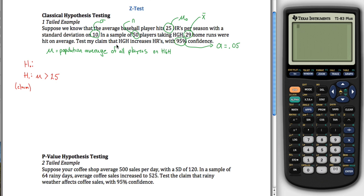If I were testing the claim that HGH decreases home runs, then this would be mu is less than 25. Whether it's greater than or less than, it's a one-tailed example. If it's greater than, it's right-tailed; if less than, it's left-tailed. And in the next example we'll see something completely different where it's two-tailed.